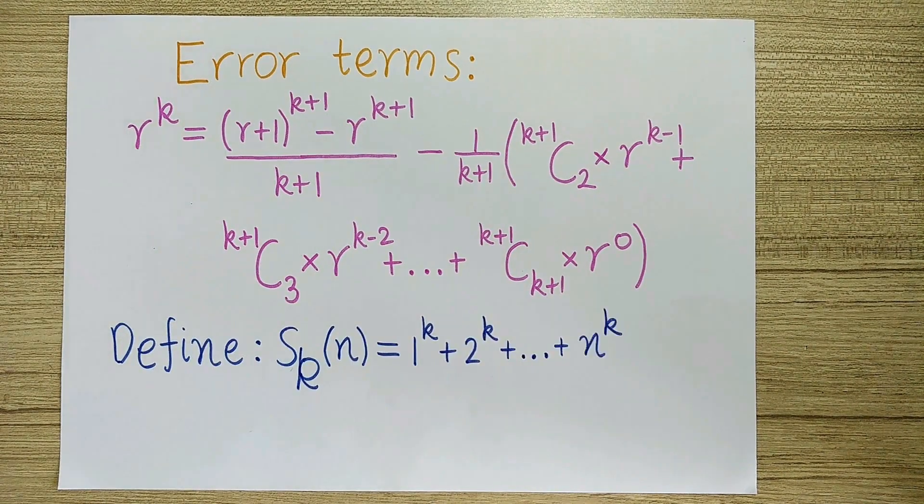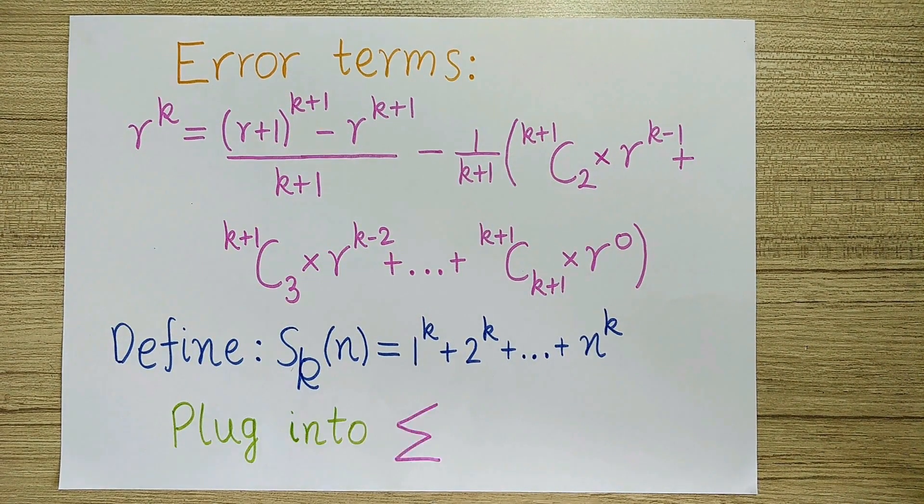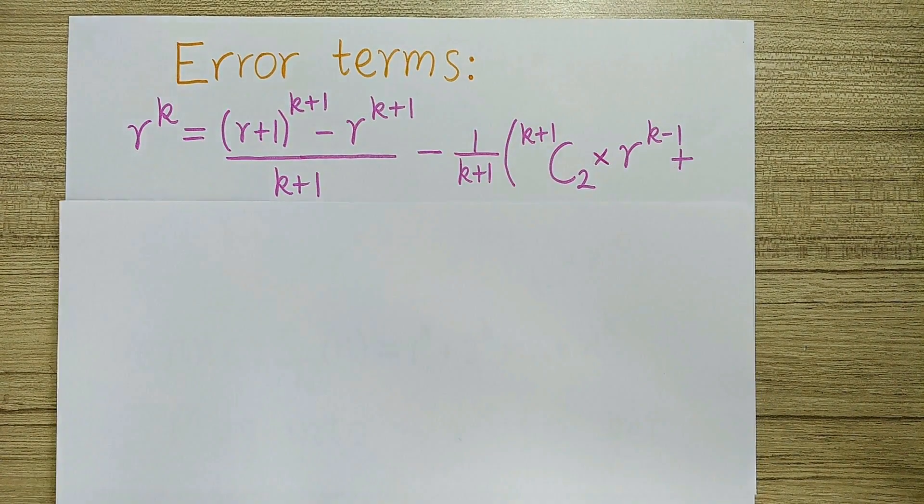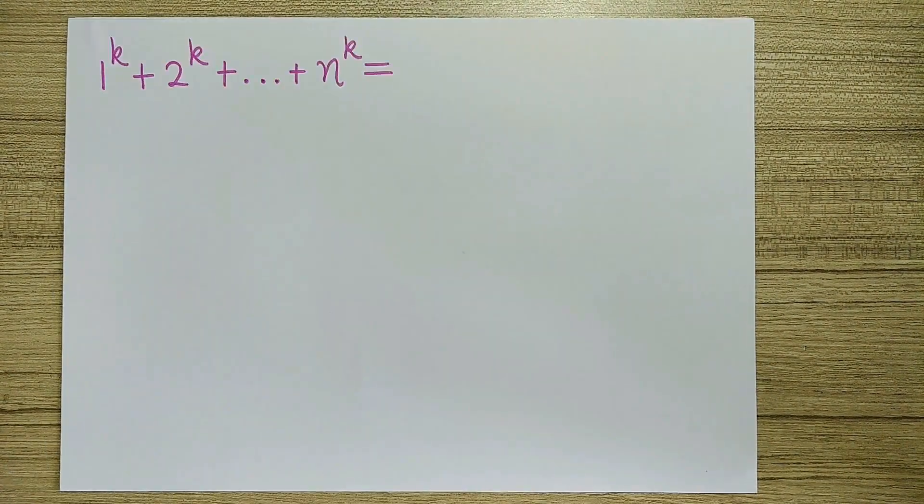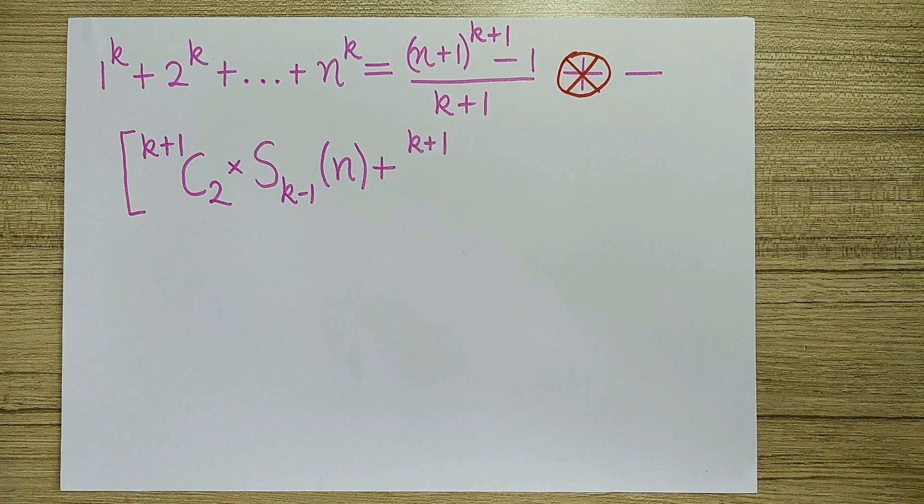To make the upcoming expression a bit cleaner, we'll use this notation. Plugging this in gives us a recursive formula for s k of n in terms of s k minus 1 of n, s k minus 2 of n and so on until s zero of n.